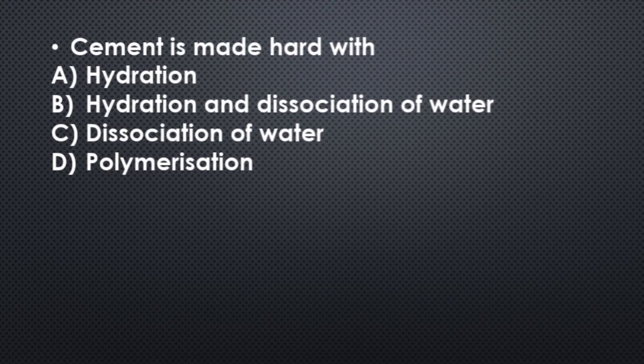Now next, cement is made hard with: hydration, hydration and dissociation of water, dissociation of water, and polymerization. Its correct answer is option B, hydration and dissociation of water.